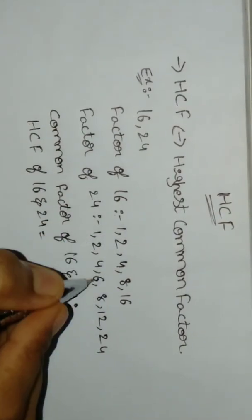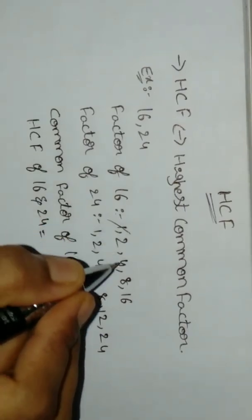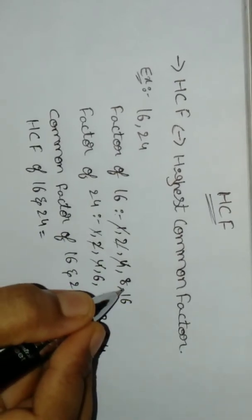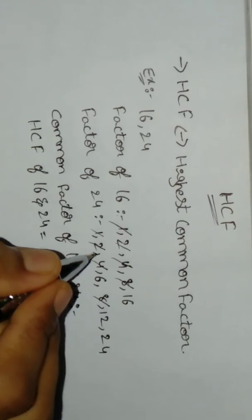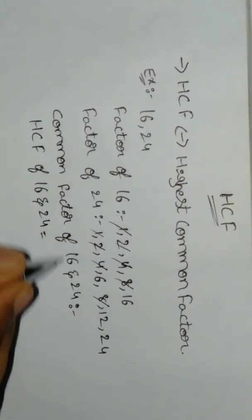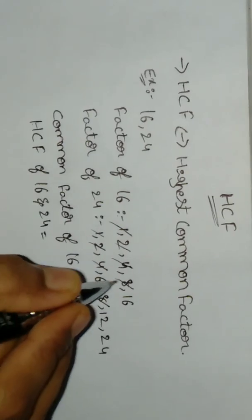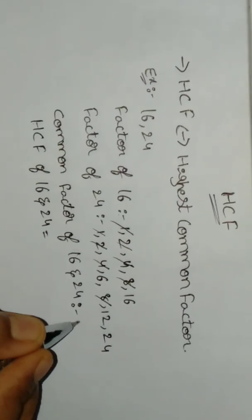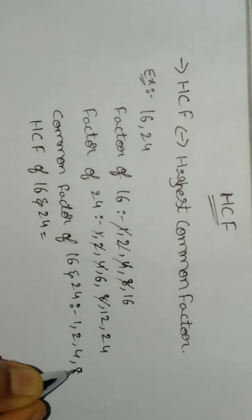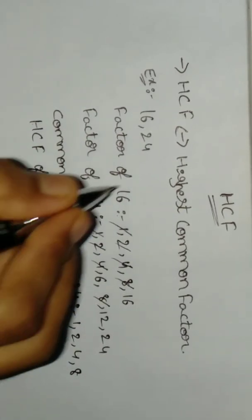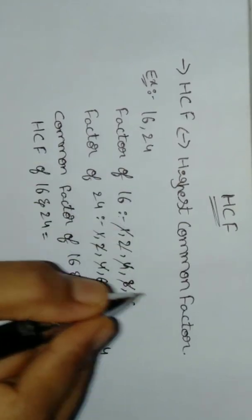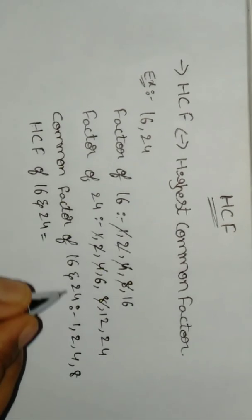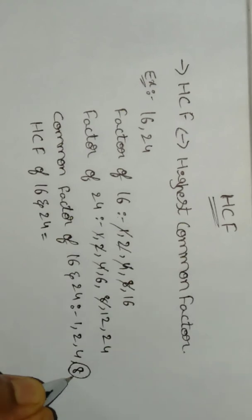So now we have common factors. Common factors are 1, 2, 4, 8. Now we have HCF. HCF is the highest common factor. So HCF of 16 and 24 is 8.